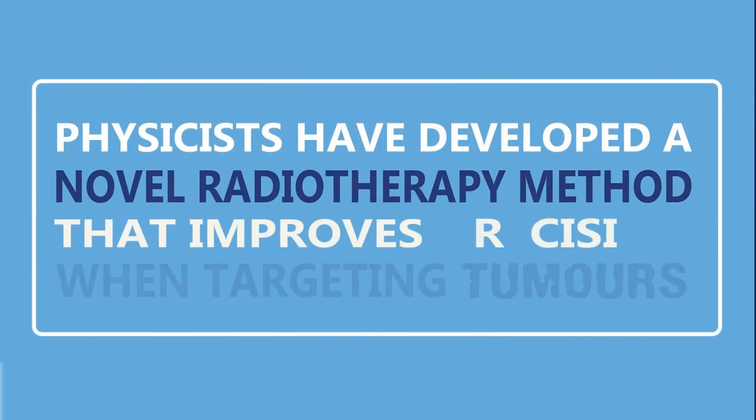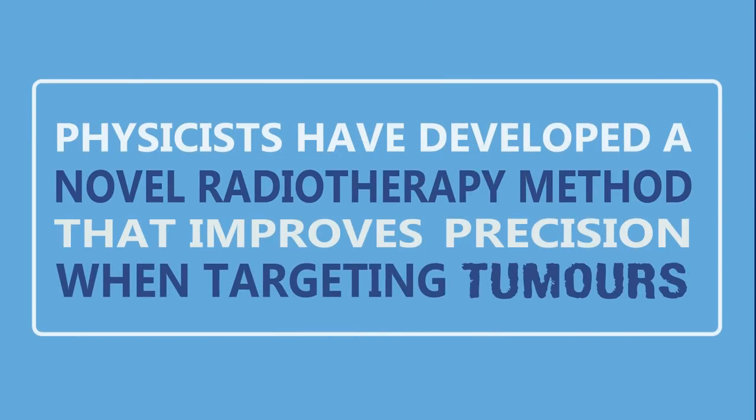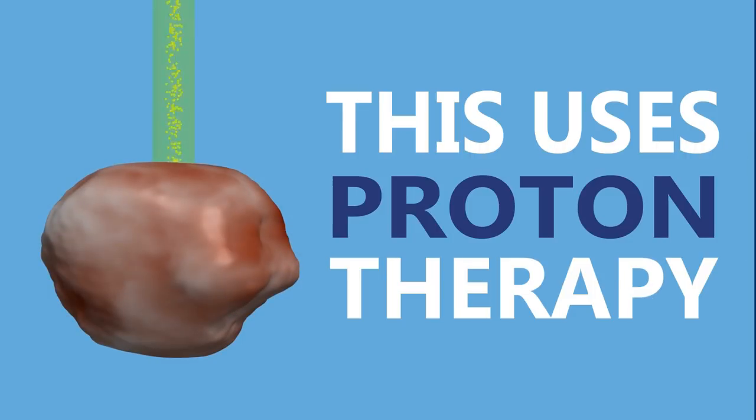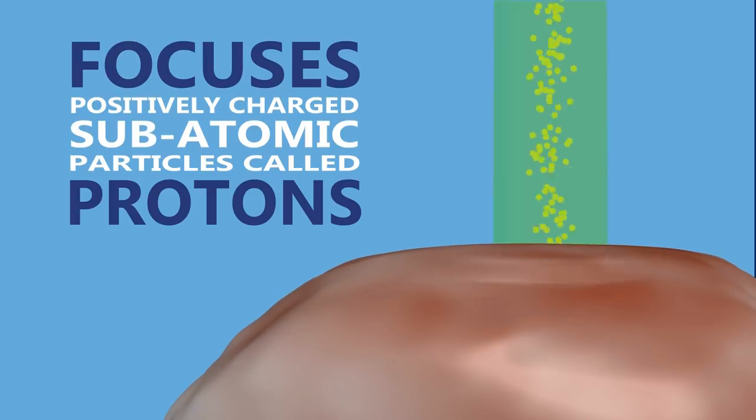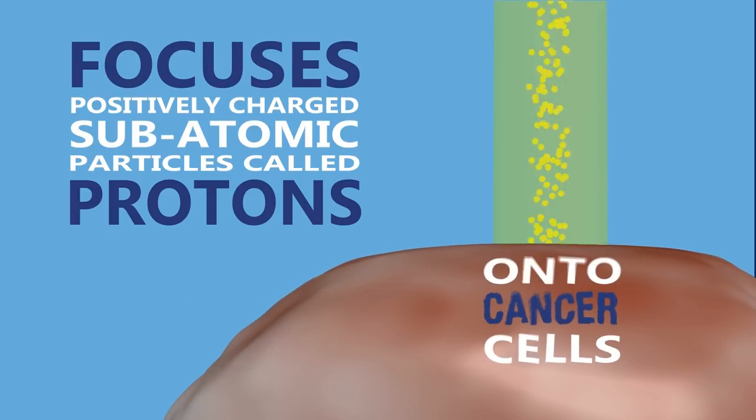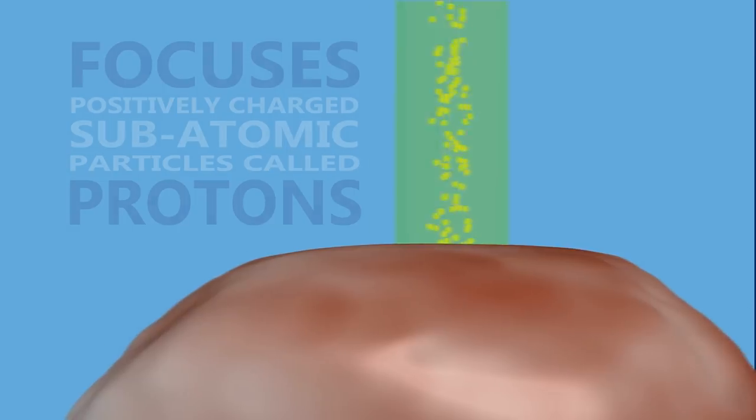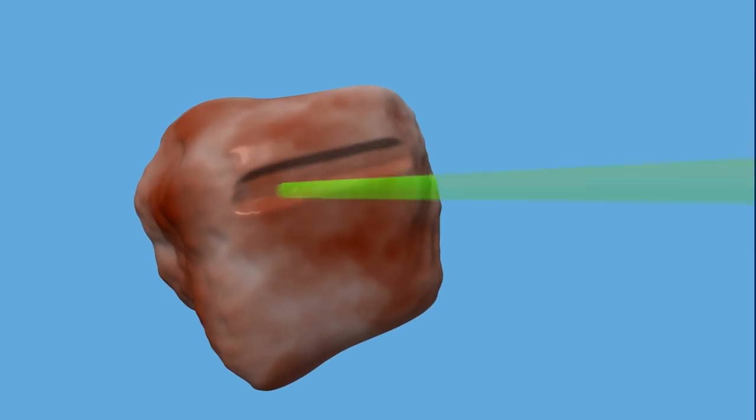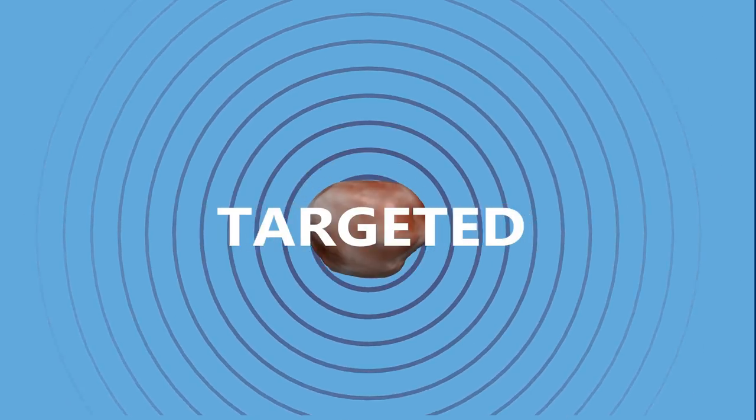Physicists have developed a novel radiotherapy method that improves precision when targeting tumours. This uses proton therapy, radiation that focuses positively charged subatomic particles called protons onto cancer cells. The most accurate application uses a technique known as pencil beam scanning. This effectively 3D paints the tumour to match the radiation dose accurately to a tumour of any shape. Not only does this ensure that the tumour is expertly targeted, but it also limits the damage caused to surrounding organs and tissues.